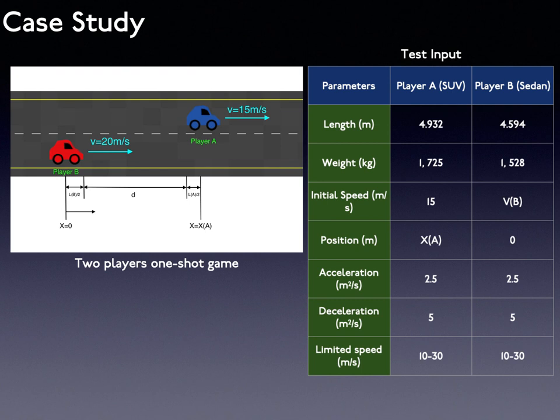After we are able to estimate drivers' payoffs, we conduct a case study to find out the gap that exists in drivers' rational decisions. We assume a scenario where the merging vehicle is faster than the lag vehicle when the game starts. We can adjust their distances and speed differences to find some interesting results. Note, this study is not a repeated game, but a one-shot game as described in classic game theory, so these experiments assume that players are memoryless. Here is a table listing the input parameters in this study.